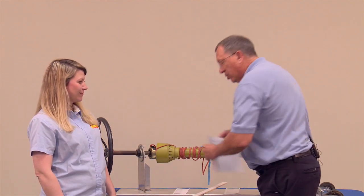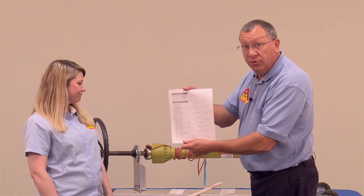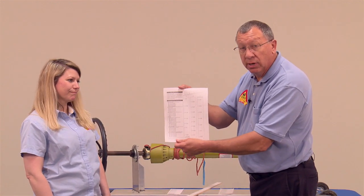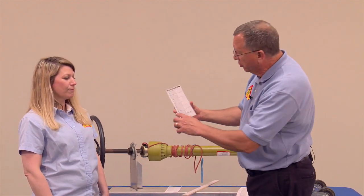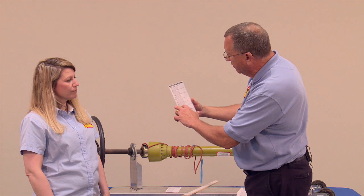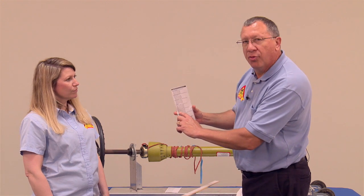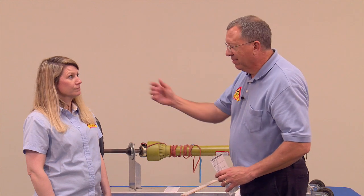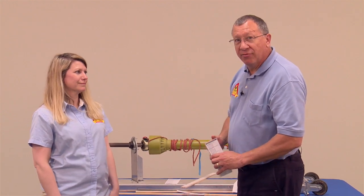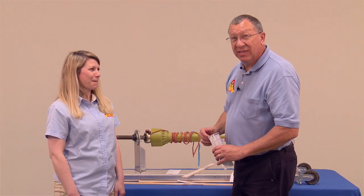If you looked at your information on your chart that's in your topics and activities manual, you're going to find that on the power takeoff shaft in 32 one hundredths of a second, 3.9 feet of something got wrapped up around the shaft.